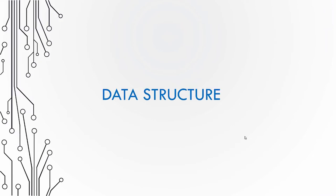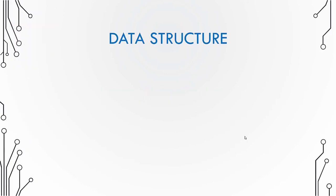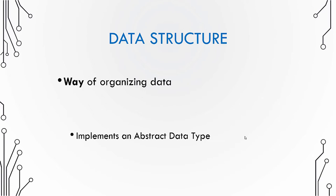Let us understand what a data structure is. In the last video we talked about abstract data type and discussed that a data structure is something that implements an abstract data type. When you talk about implementation, you always talk about organization of data in memory in such a way that you can have easier access to that data and use it efficiently.